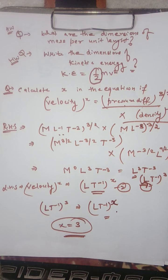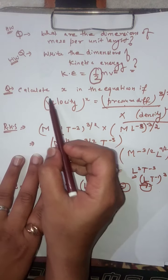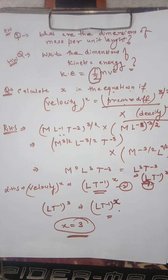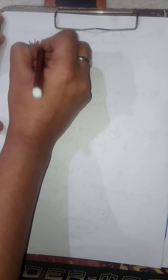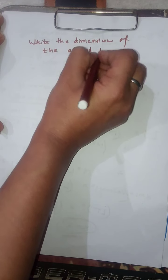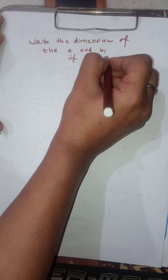Again, to recap that question: calculate x in the equation where velocity to the power x equals pressure difference to the power 3/2 times density to the power minus 3/2, and you need to calculate the value of x only. Moving ahead to the next question: you have to write the dimensions of a and b if v equals a plus b times t.